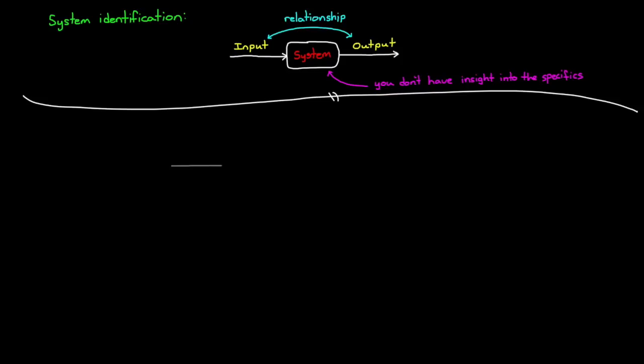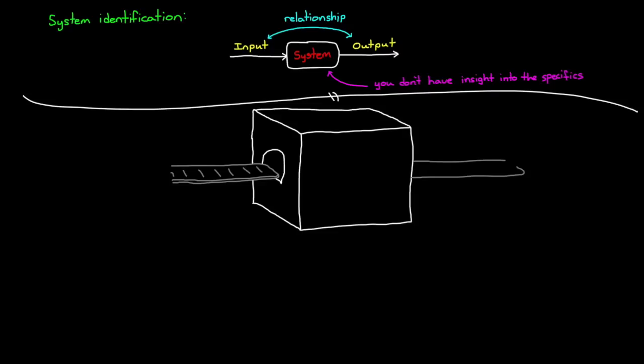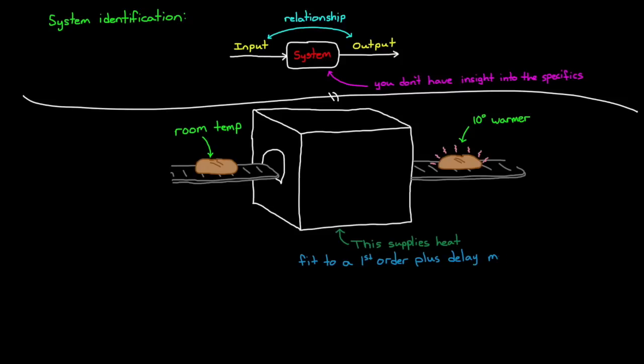Now, as a rather absurd example, imagine a box with a hole on either side and a conveyor belt that moves through it. You don't know what happens inside the box, but you do have access to items before and after they go through it. You place a loaf of bread at room temperature on the belt and send it through. When it comes out, the bread is 10 degrees warmer. Now, at this point, you're pretty confident that whatever is in the box supplies heat. And by understanding the thermal properties of the bread, you can infer how much heat was imparted by the system and create a representative heating model.